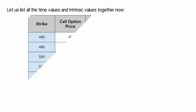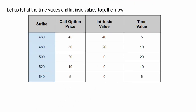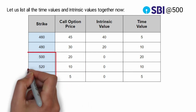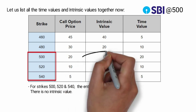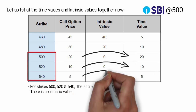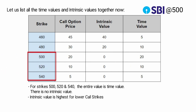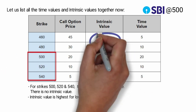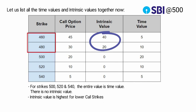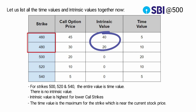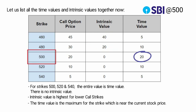By seeing this table, we can note the following points. Number one: for strikes 500, 520, and 540, the entire value is time value — there is no intrinsic value in these options. Number two: intrinsic value is higher for lower call strikes. Number three: the time value is maximum for the strike which is near the stock price.